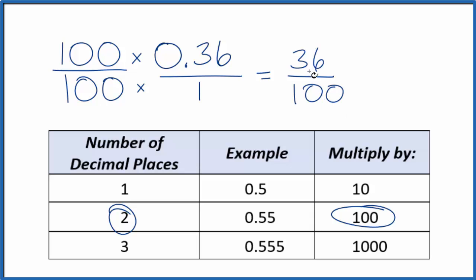So now we have a fraction. We can reduce this to simplest form. 4 goes into 36 nine times, 4 goes into 100 twenty-five times.